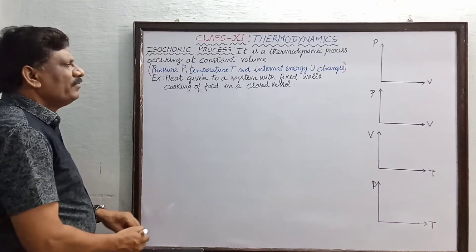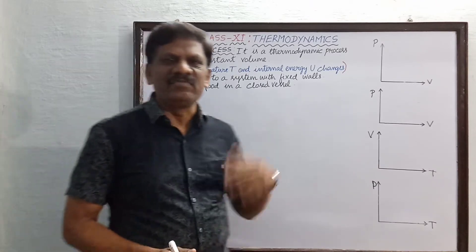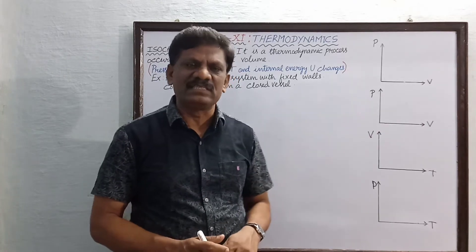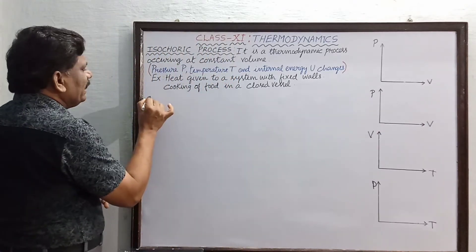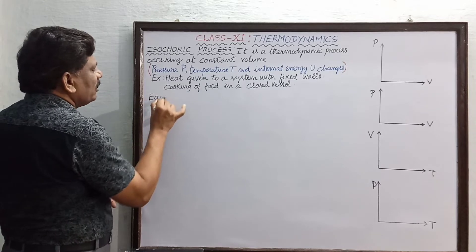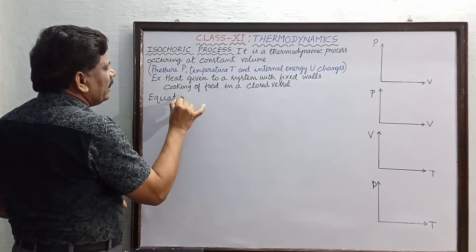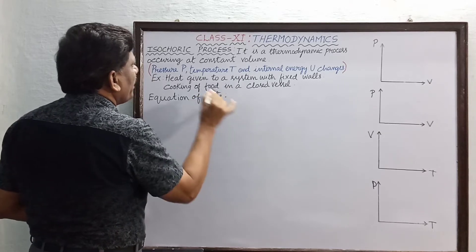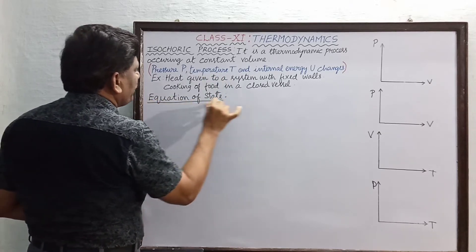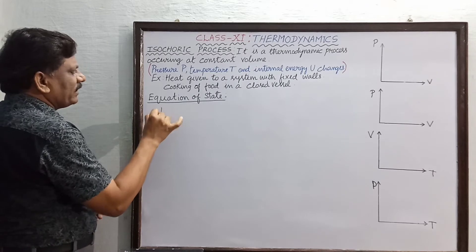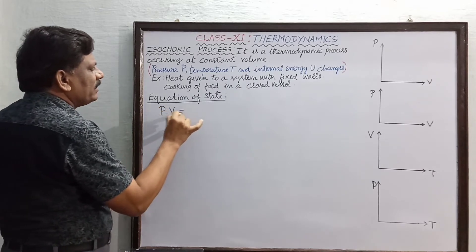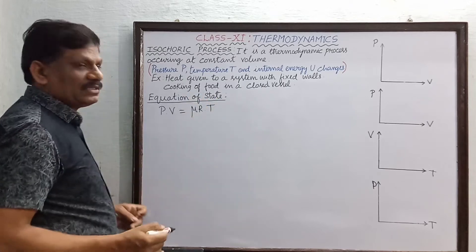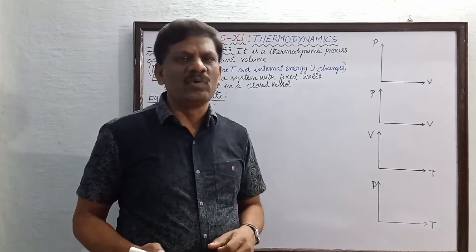Now we are studying the equation of state for every thermodynamic process, which relates the pressure, volume, and temperature of a system. For an isochoric process, we start with the general ideal gas equation: PV = μRT, for μ moles.